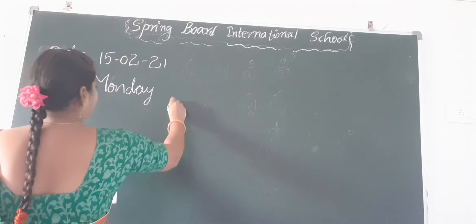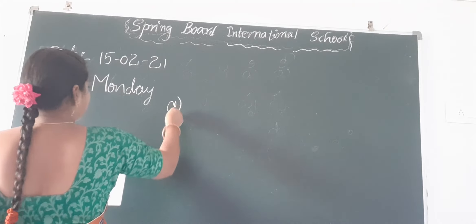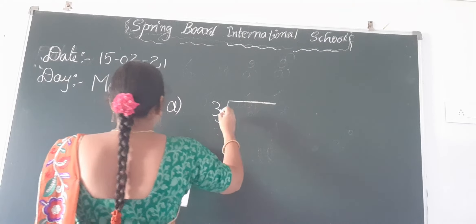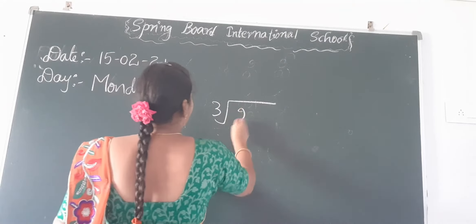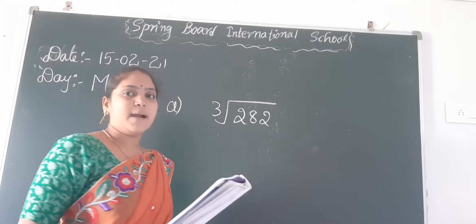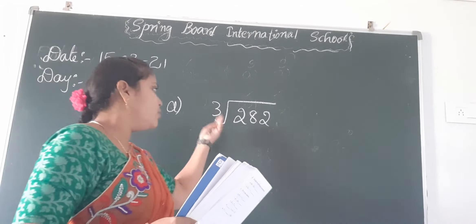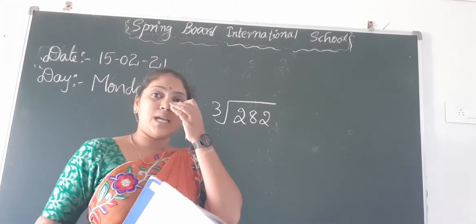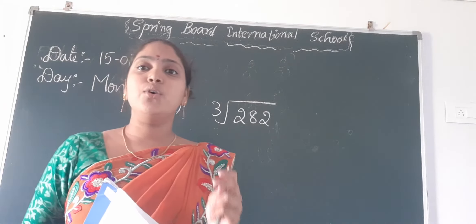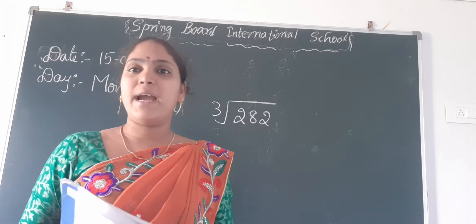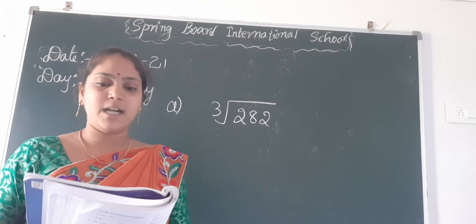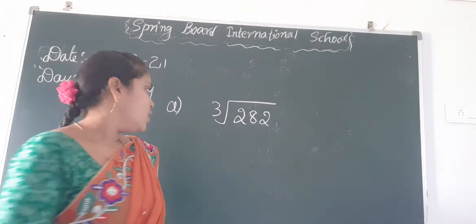So the first question is 282 divided by 3. Here you have to do the division using expanded form — not normal division. We have to use expanded form to solve this.